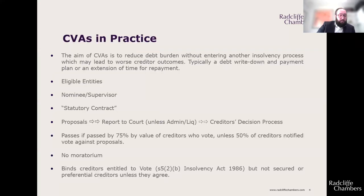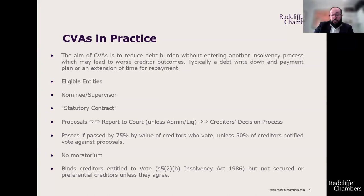How do CVAs operate in practice? A CVA can be seen as a means to reduce the debt burden of a company. Commonly it's an offer to pay a certain value in the pound — say 75p for every £1 in debt — over a particular timeline, or to pay 100p in the pound but extend the timeline for payment. This is proposed on the basis that if the company went into liquidation, creditors would get far less due to the disorderly breakup of the business.